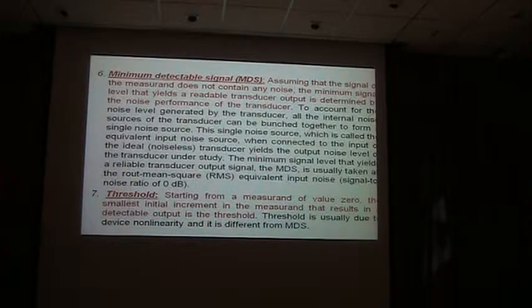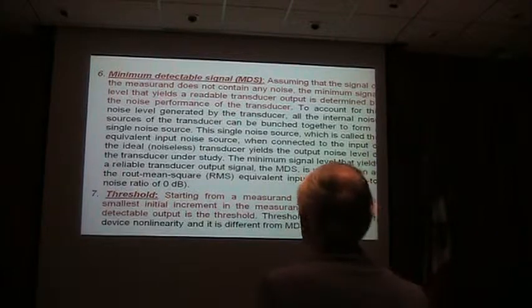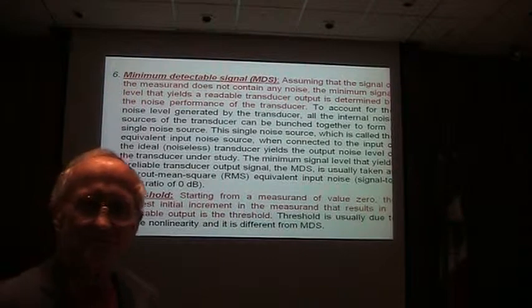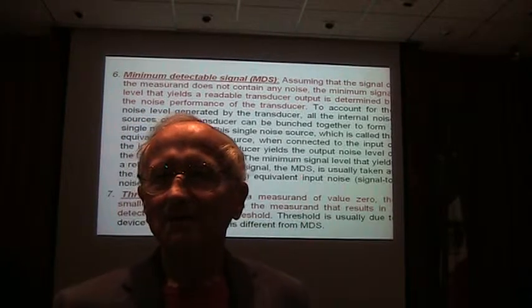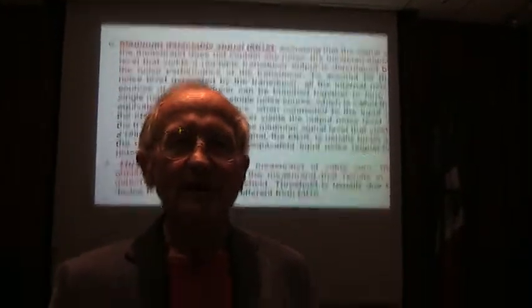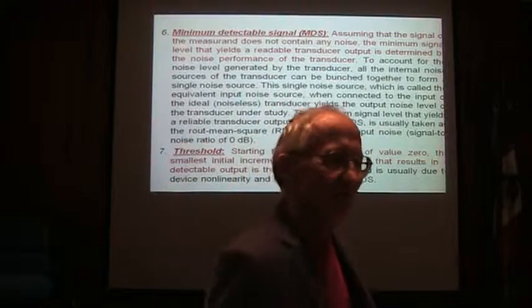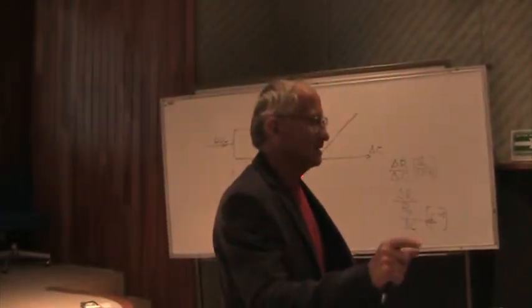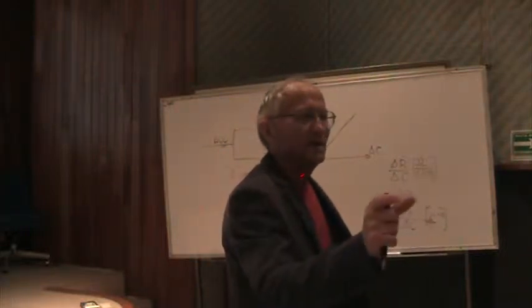The next very important parameter is minimum detectable signal, which is related to noise. All electronic engineers know that any type of electrical device is noisy. If you connect a resistor, capacitor, inductor, or sensor to a scope, my question is: do you see a flat line? Take a carbon monoxide sensor, place it in a gas chamber filled with dry nitrogen — no carbon monoxide at all, no input signal — and connect it to the scope. What do you observe?